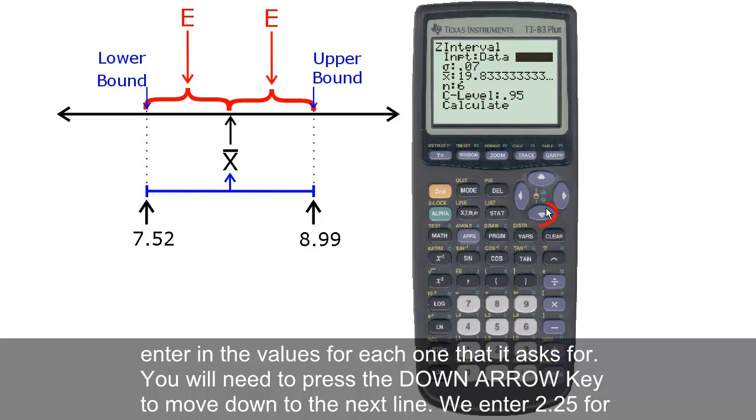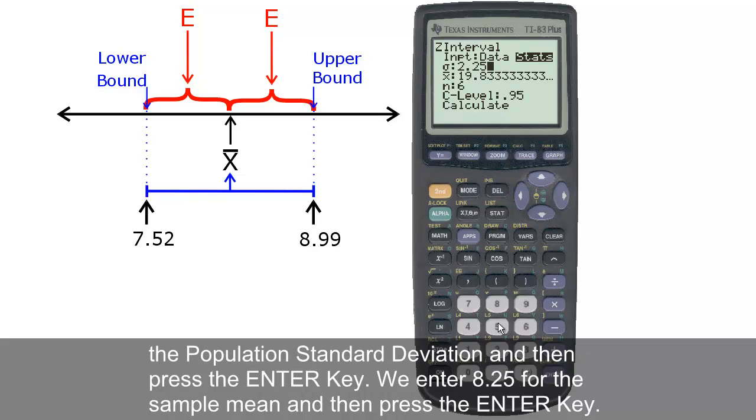You will need to press the down arrow key to move down to the next line. We enter 2.25 for the population standard deviation. And then press the ENTER key. We enter 8.25 for the sample mean. And then press the ENTER key.